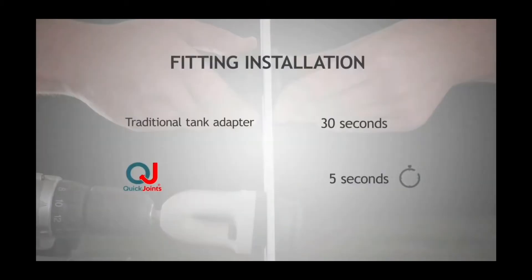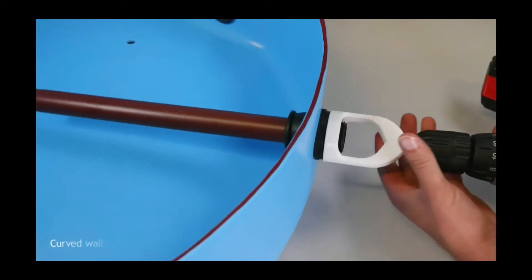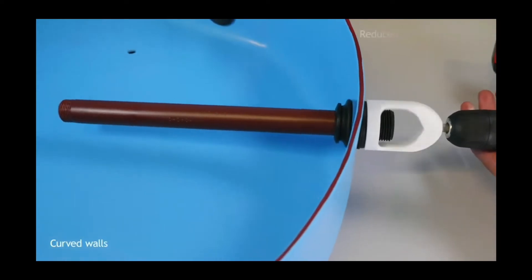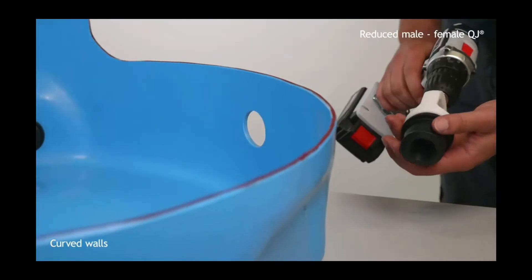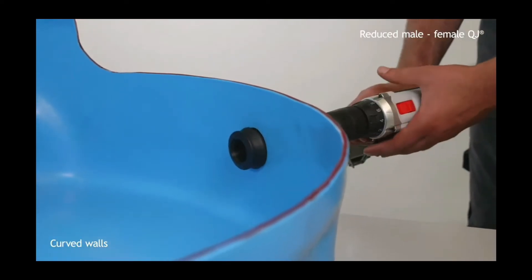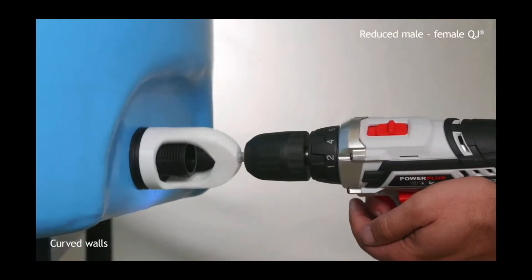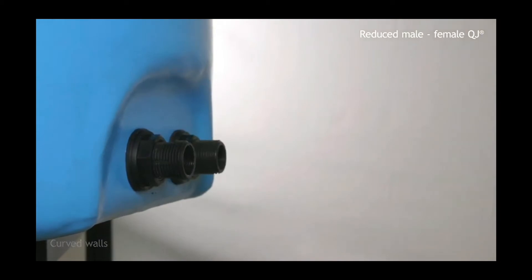With the QJ, it can be inserted on curved walls with a radius of 50 centimeters. The gasket, variable in its section, can be fitted to the whole surface and guarantees hydraulic seal even on uneven walls and with variations in thickness.